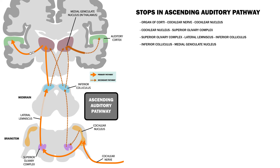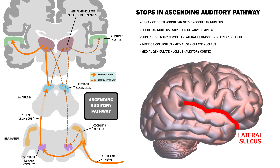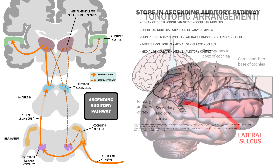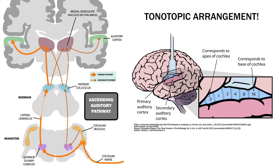Finally, the information continues into the auditory cortex. The auditory cortex is tucked into the lateral sulcus. The auditory core region contains the primary auditory cortex, or A1, which is organized tonotopically. In other words, it's arranged by frequency. There are actually tuned neurons that respond only to specific frequencies, and they are arranged in a tonotopic map.